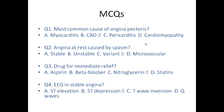Here are some MCQs. Most common cause of angina pectoris: myocarditis, CAD, pericarditis, cardiomyopathy — answer is CAD (coronary artery disease). Angina at rest caused by spasm — what type is this? It is variant angina (Prinzmetal angina). Drug for immediate relief: aspirin, beta blocker, nitroglycerine, statins — answer is sublingual nitroglycerine. ECG finding in stable angina — answer is ST depression.